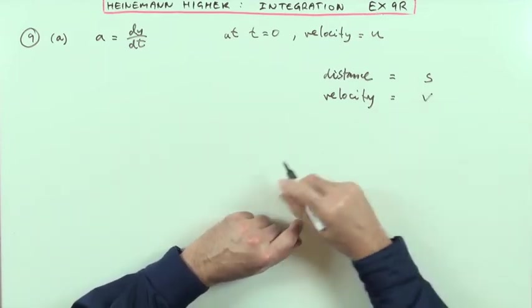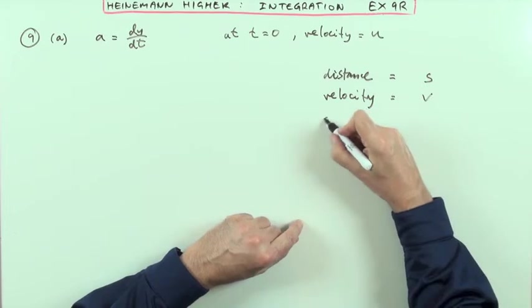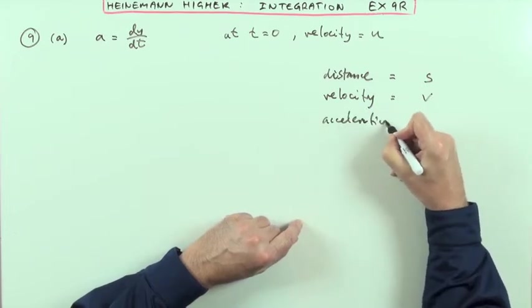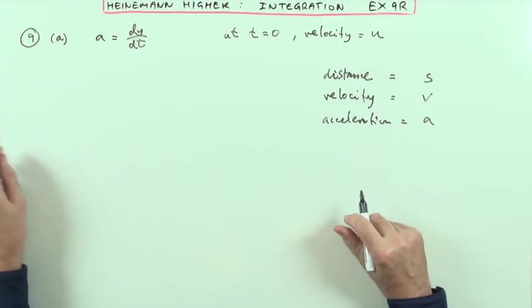But even so, velocities are there, a V is used for that, that's like the speed, and then acceleration, or at least that one's what it says, that's A.